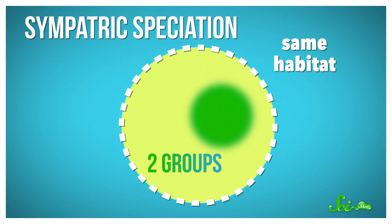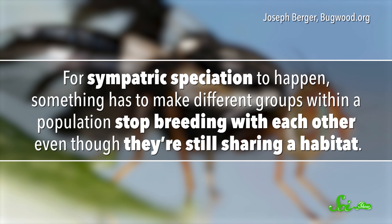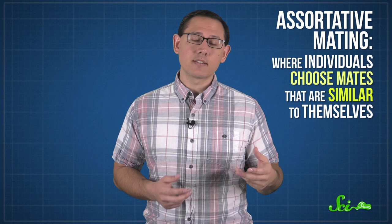Like in the case of the apple maggot fly, an insect native to North America that split into two very different groups around the mid-1800s. For sympatric speciation to happen, something has to make different groups within a population stop breeding with each other, even though they're still sharing a habitat. The process generally starts with disruptive selection, when natural selection drives a population in two different directions at the same time. Combine that with assortative mating, where individuals choose mates that are similar to themselves, and you can end up with two different groups splitting off from each other. If these forces are at work for long enough, they can cause one species to break up into two, each carving out a separate niche in their shared ecosystem.